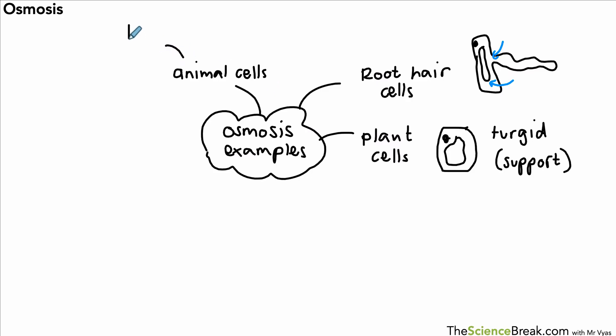We've also got animal cells that can be affected by osmosis, but they will either burst or shrivel. They haven't got a cell wall, so it might shrivel up or it might actually burst. There's no cell wall to stop it from bursting.